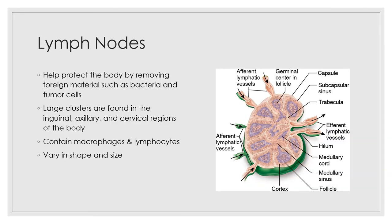Lymph nodes help to protect your body by removing foreign materials such as bacteria and tumor cells. Large clusters are found in the inguinal (groin), axillary (underarm), and cervical (neck) regions of the body. They contain macrophages and lymphocytes and vary in shape and size. The picture here shows the structure of a lymph node cut longitudinally.